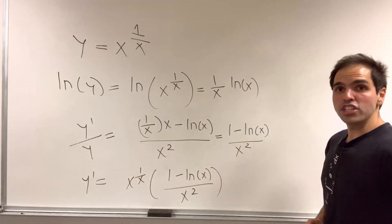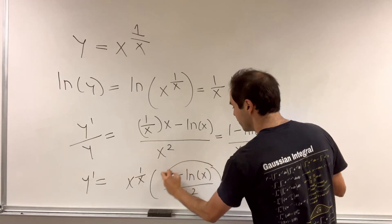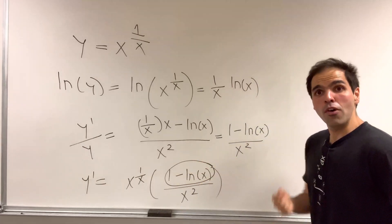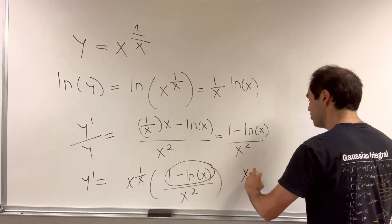The question is, when is this positive, when is this 0, and when is this negative? It's 0 precisely when ln of x equals 1, which is when x equals e.